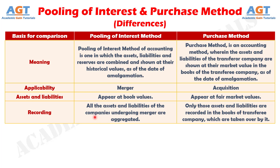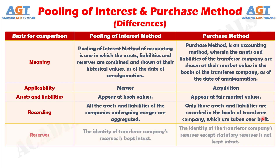Difference number 4: in pooling of interest method, the recording of assets and liabilities of the merging companies is aggregated. On the other hand, when it comes to purchase method, only those assets and liabilities are shown in the balance sheet of the acquiring company which are taken over by it.